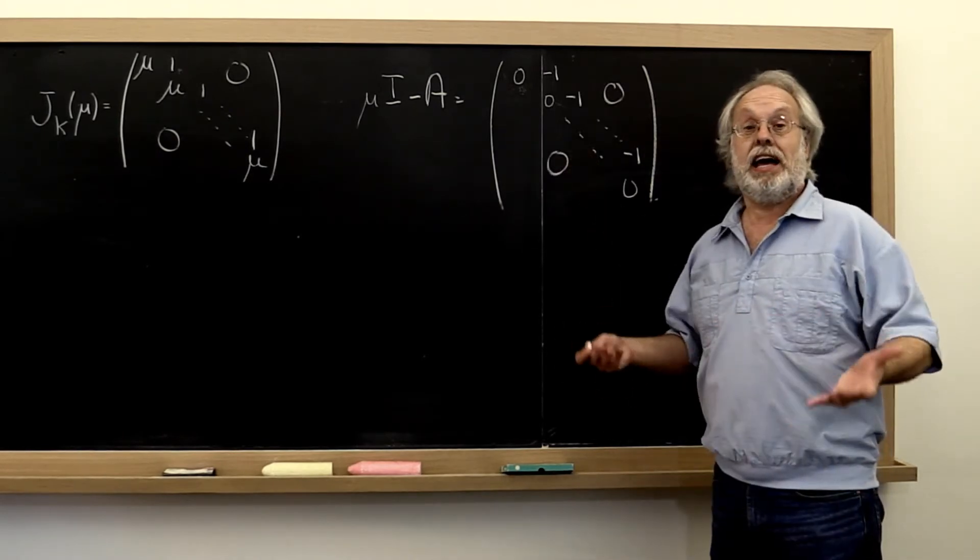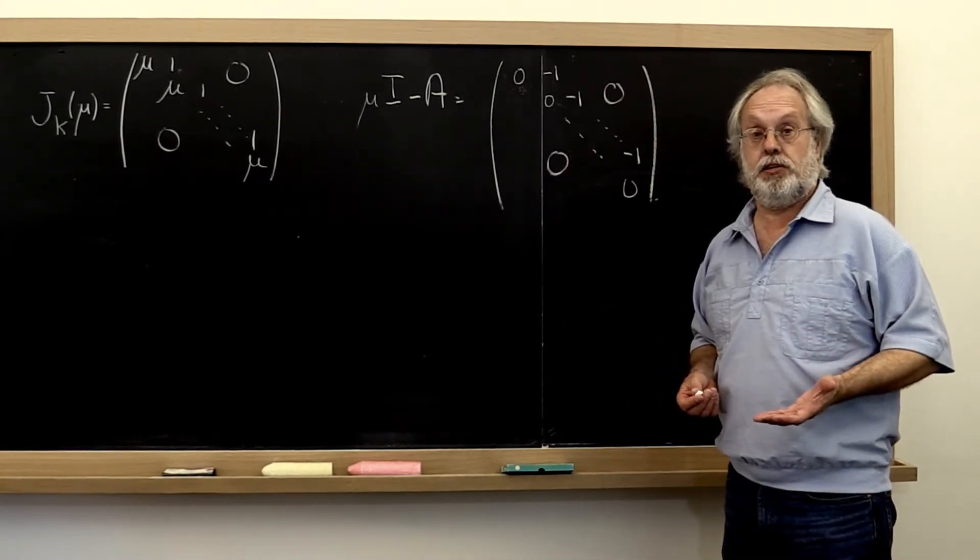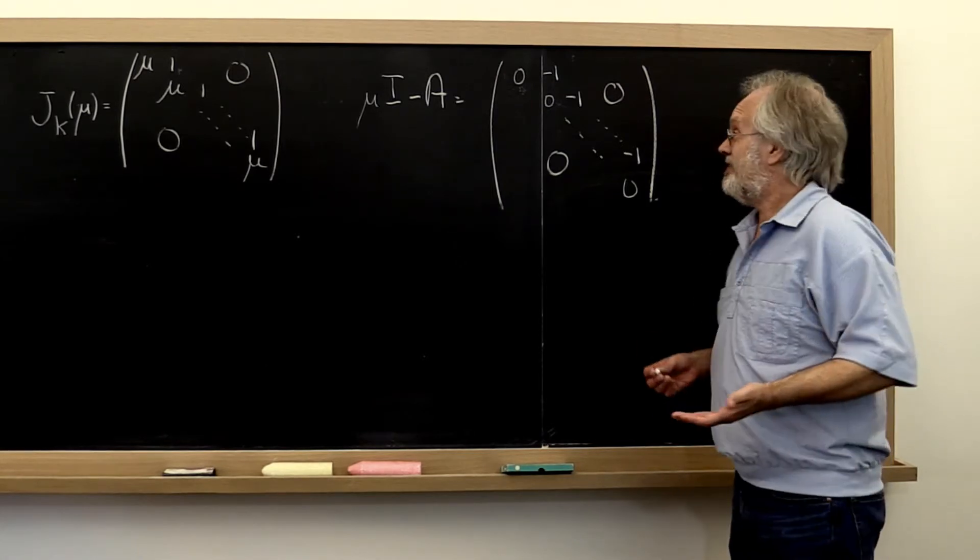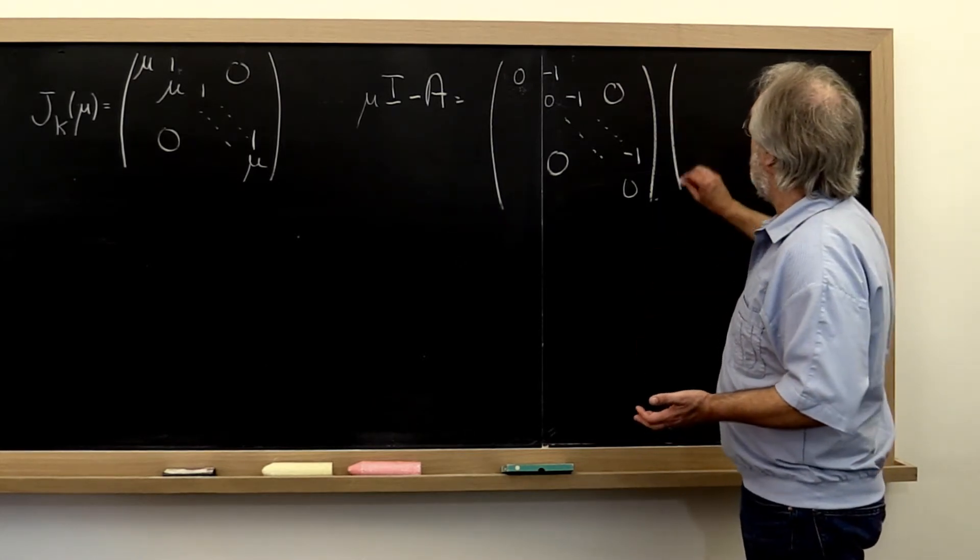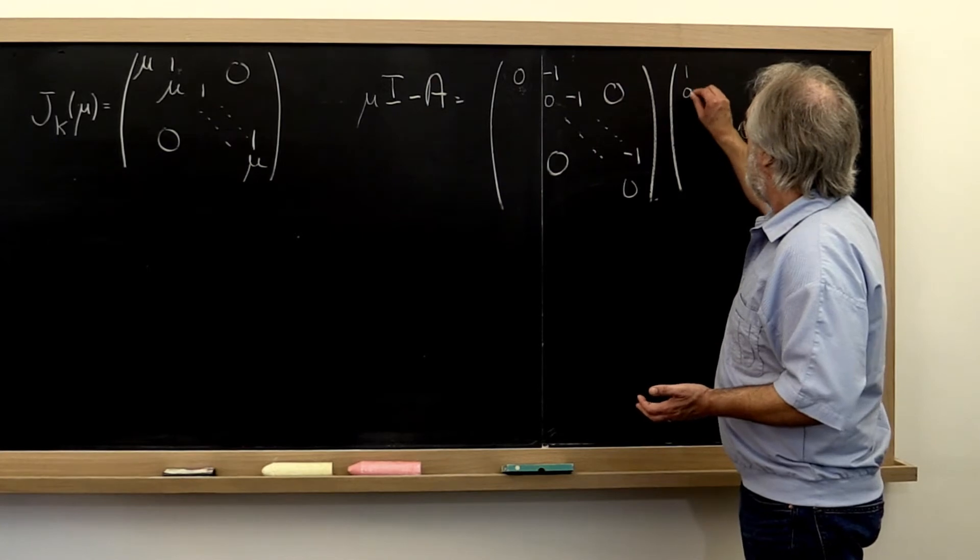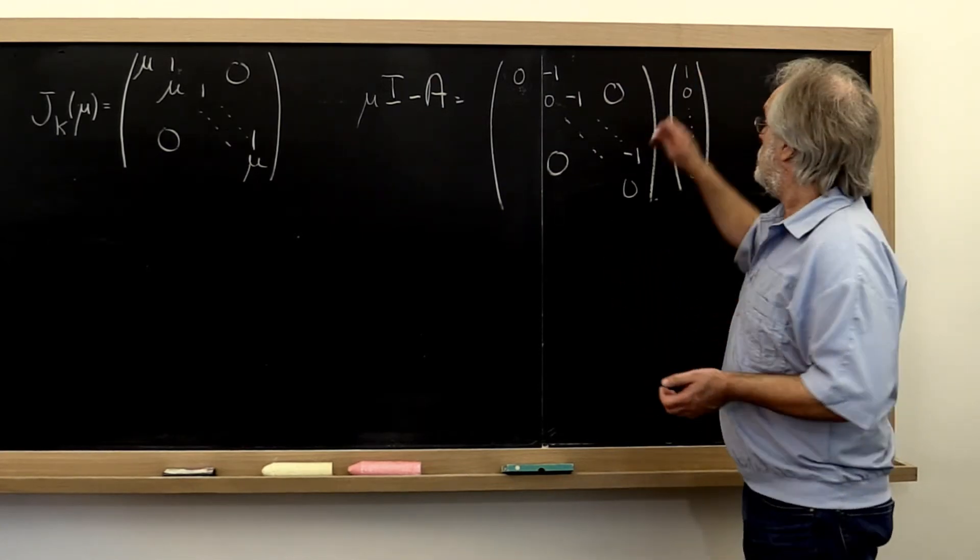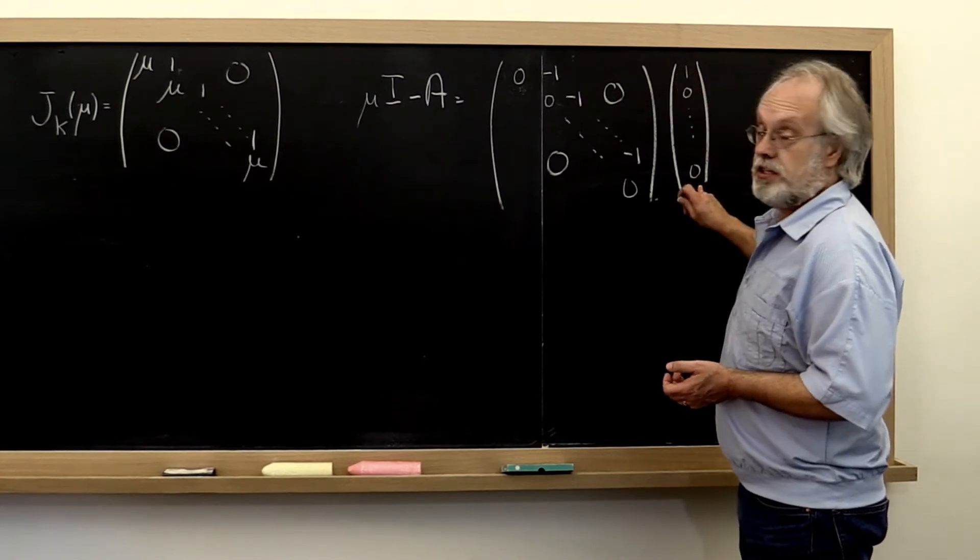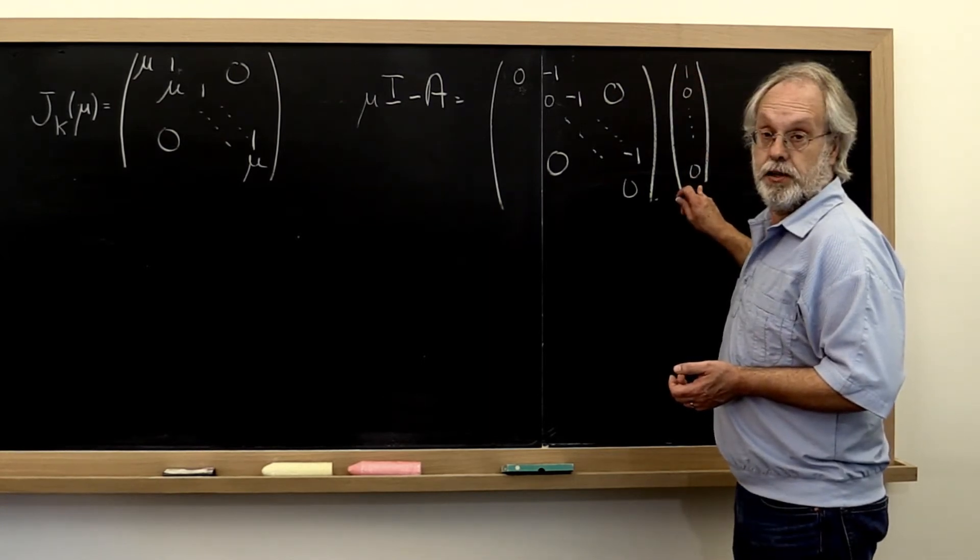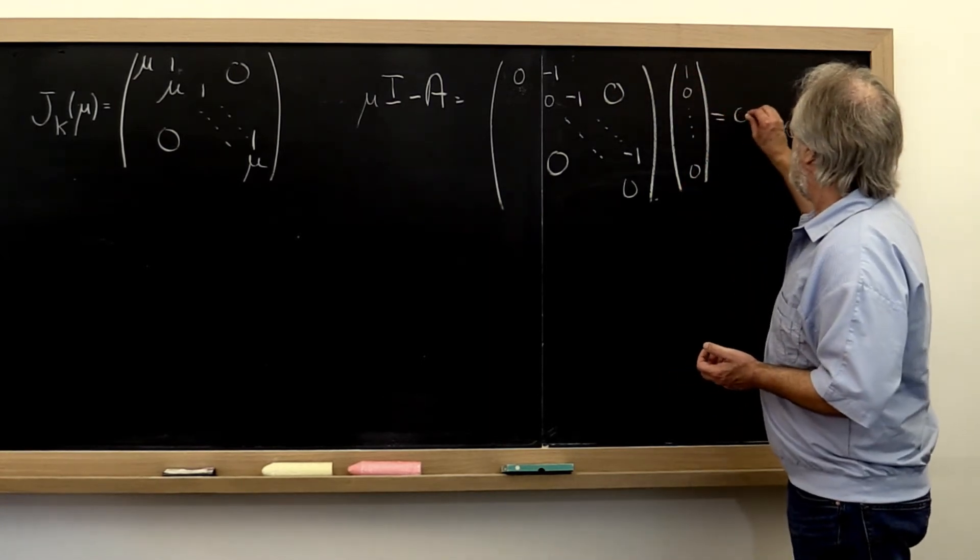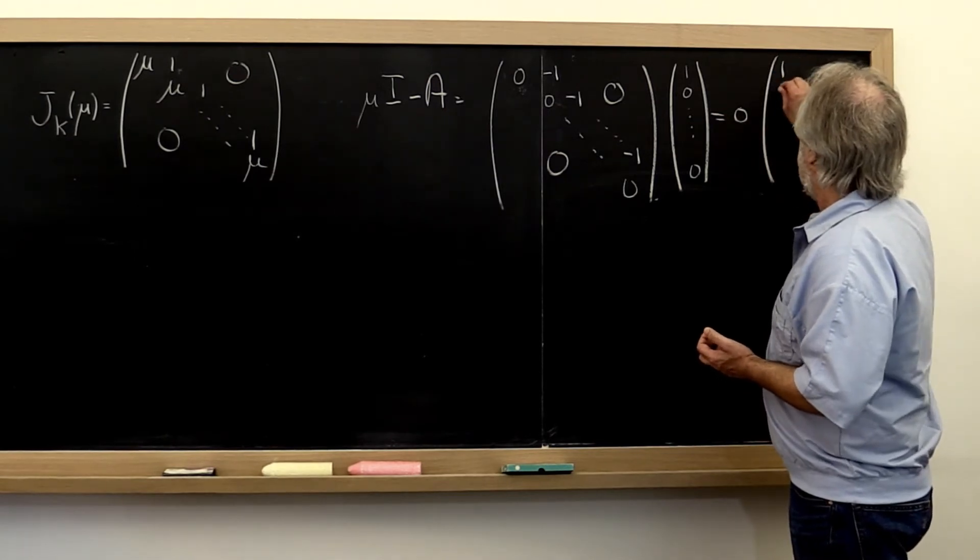What is an eigenvector of this matrix? It's actually easy to determine. If you multiply this matrix by a vector that's just one with all zeros—that's the first standard basis vector—then you get zero times that vector back.